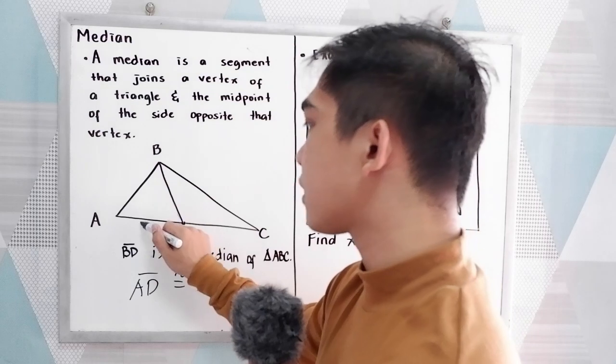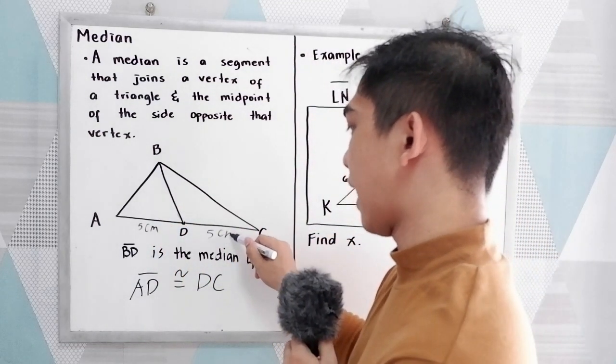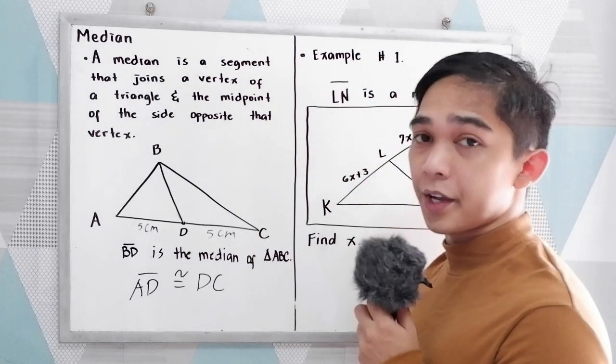If AD measures 5cm, therefore the measure of DC is 5cm. That is the median of a triangle.